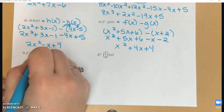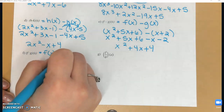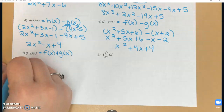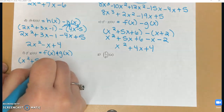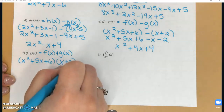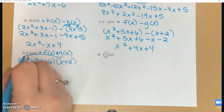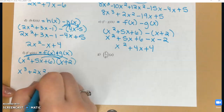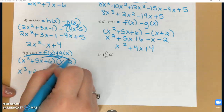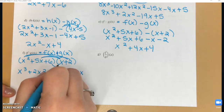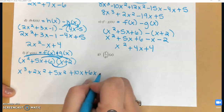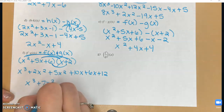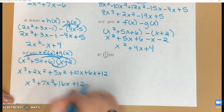Part F, I am multiplying again — f of x times g of x. I'm going to have to do multiplication six times because I'm multiplying a three-term function by a two-term function. x squared times x gives x cubed; x squared times 2 gives 2x squared; 5x times x gives 5x squared; 5x times 2 gives 10x; 6 times x gives 6x; and 6 times 2 gives 12. Combining like terms gives the final result.